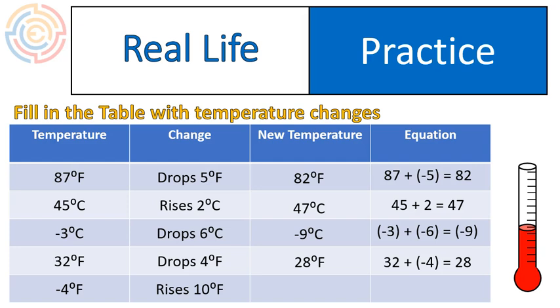And negative 4 degrees Fahrenheit rising by 10 degrees would become 6 degrees. And that would be our addition question there. Negative 4 plus 10 is equal to positive 6, or 6 degrees Fahrenheit.